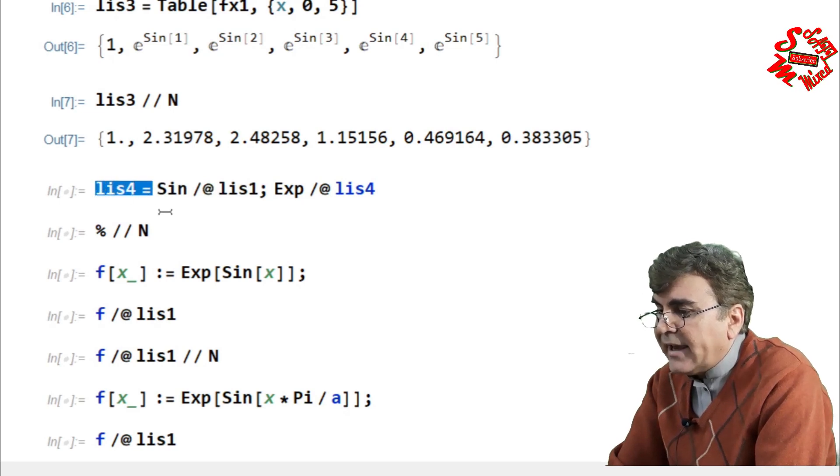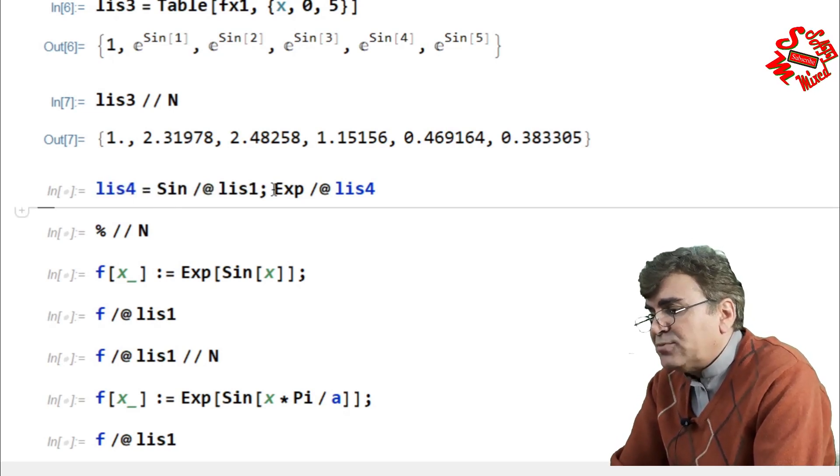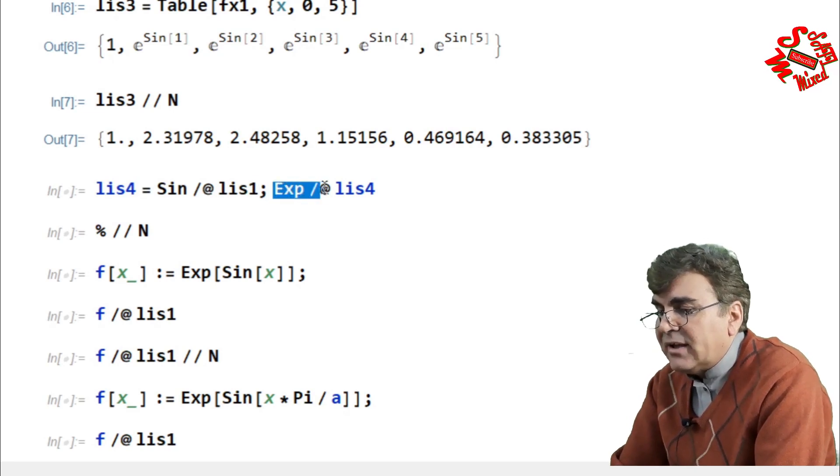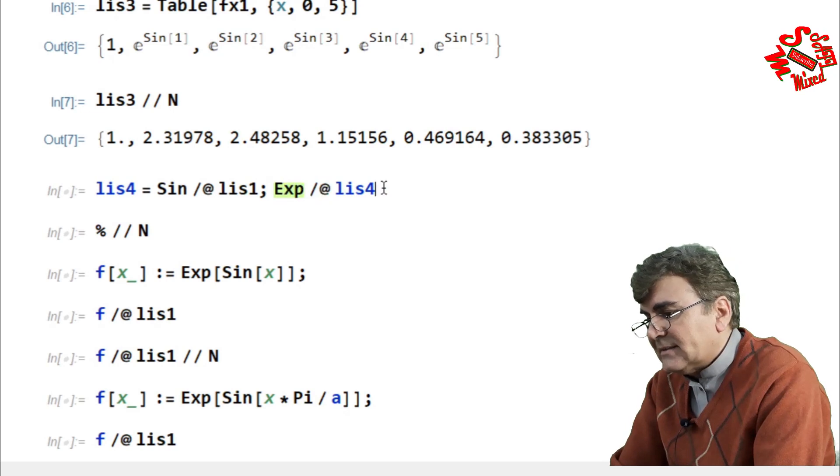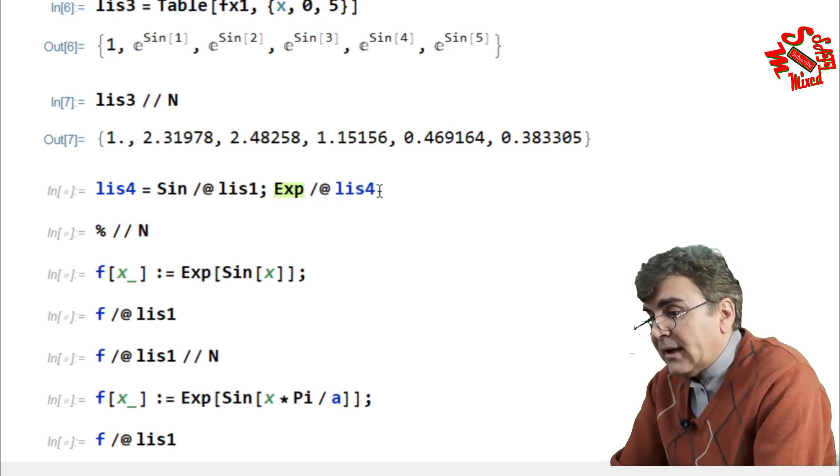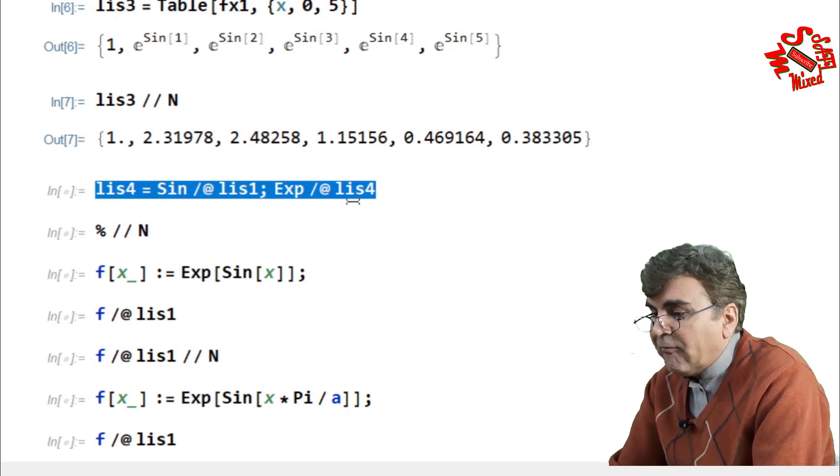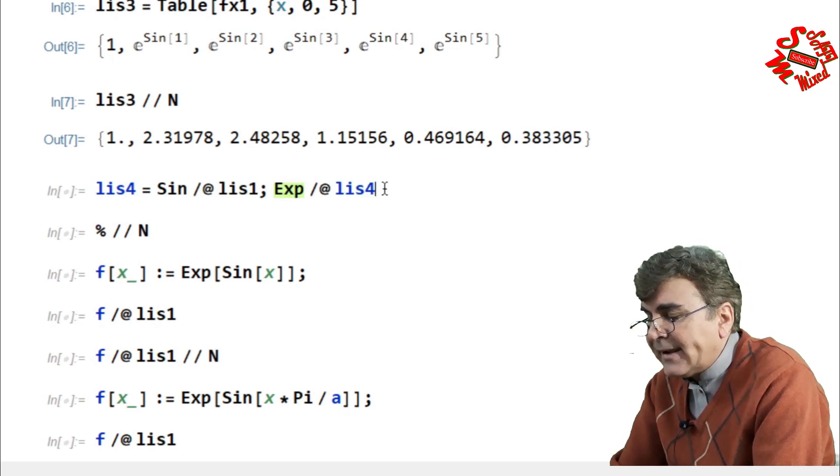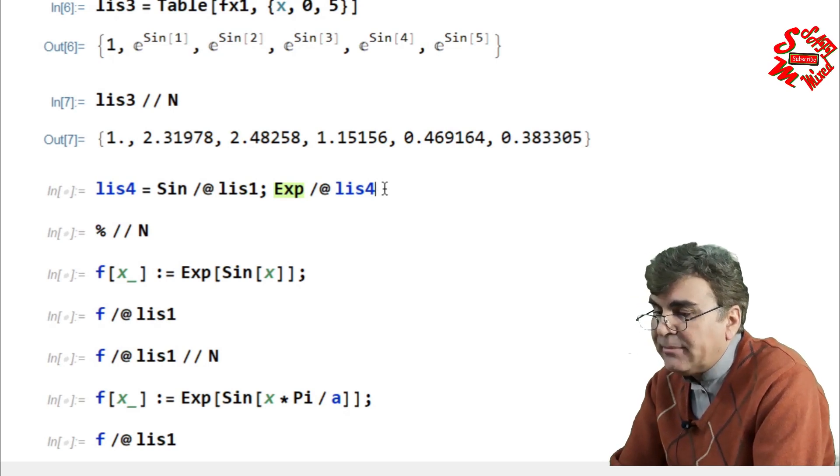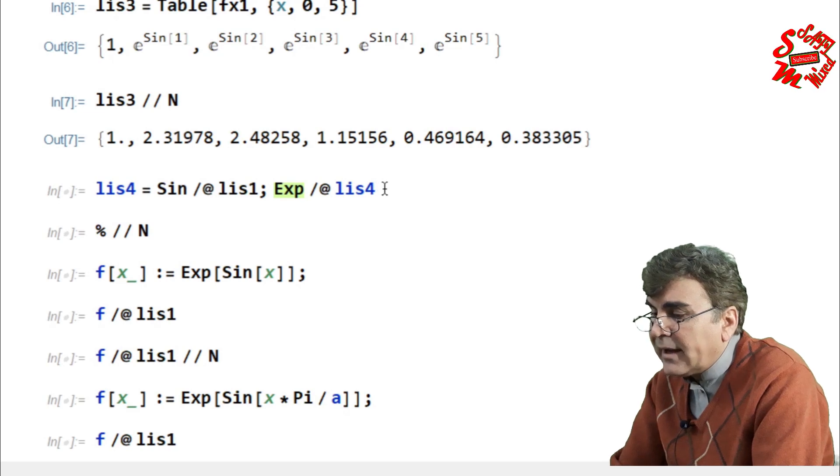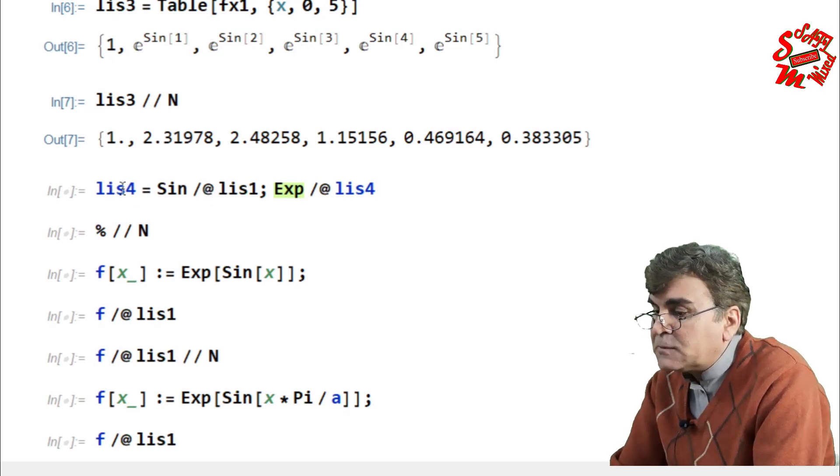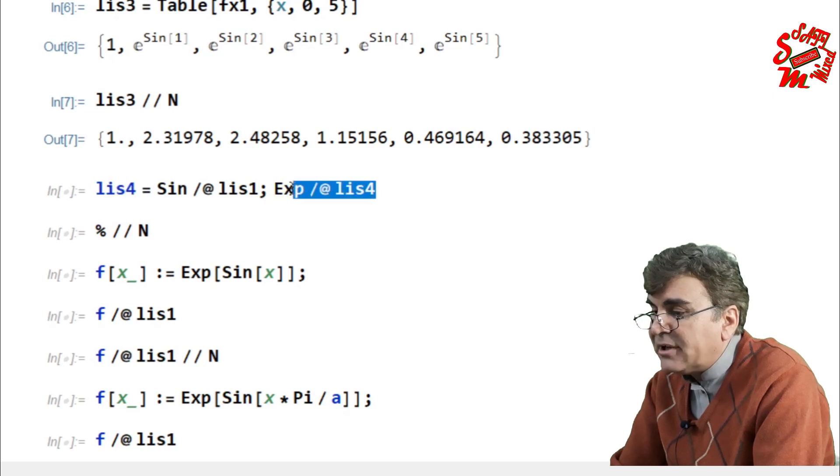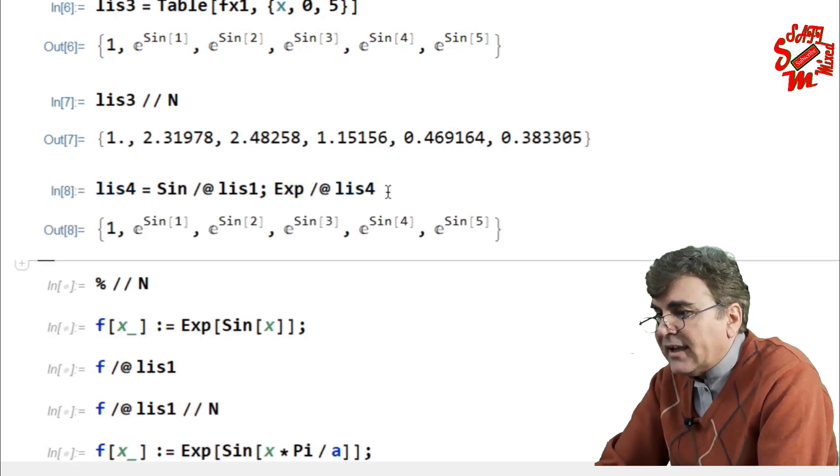And simultaneously I then apply the exponent function to each element of lis4. So this single line will apply both functions to the list. Keep in mind here I am not making any table. Rather I am directly taking the value of the list and mapping sine function over each element, and once this list is formed then I ask Mathematica to apply the exponential function to each element of list four. So if I run this I will get the same result as over here.